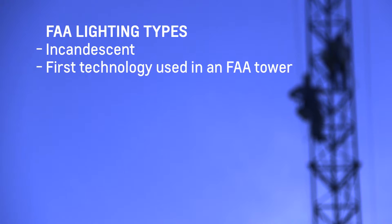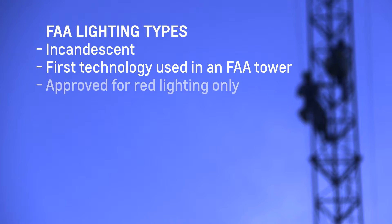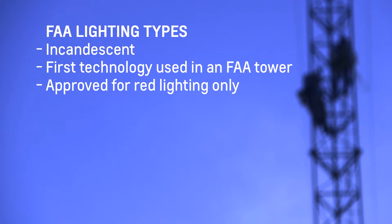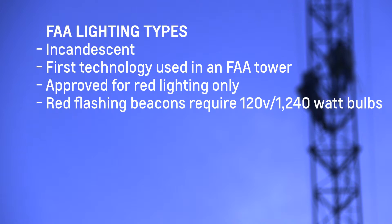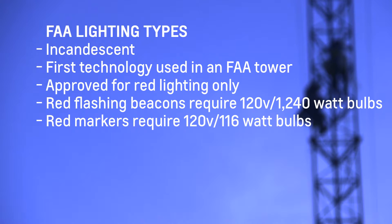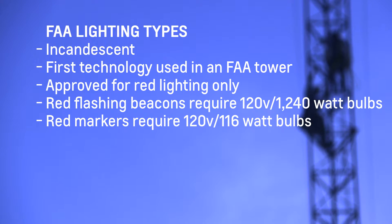Lighting technologies - Incandescent. Incandescent lighting was the first technology used in an FAA tower application, dating back to 1915. Incandescent systems are approved by the FAA for red lighting only. Incandescent bulbs are the cheapest and easiest to replace; however, they have the highest energy consumption and typically require relamping annually. To meet the FAA spec, red flashing beacons require 120 volt, 1240 watt bulbs, and red markers require 120 volt, 116 watt bulbs. Typically, these bulbs can only be sourced from specialty lighting distributors.